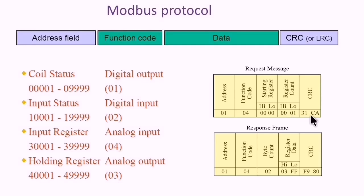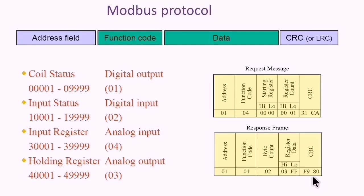The response contains the address, then the function code, then the byte count which contains the number of bytes of data, then the data itself, followed by the CRC.